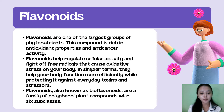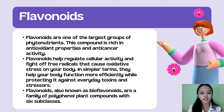Antioxidants help your body fight off potentially harmful molecules. Your body produces antioxidants naturally, but they are also found in dark chocolate, legumes, and many fruits and vegetables. Inflammation is one of the body's immune responses — allergens, germs, toxins, and other irritants can trigger inflammation that results in uncomfortable symptoms. Flavonoids may help our body dismiss that inflammatory reaction so that those symptoms are reduced.